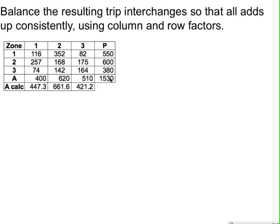For example, column 1 adds up to 447 instead of 400. That's not right — everything has to be consistent. So we need to adjust the column values using a factor: 400 divided by 447, which gives the correction factor to apply to each entry in that column.